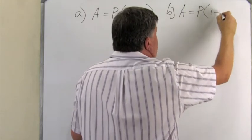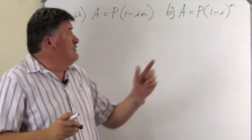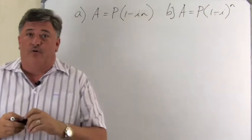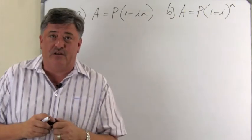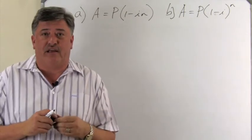For compound interest, A equal to P, one plus I to the N. For compound depreciation, it is A equal to P, one minus I to the N.